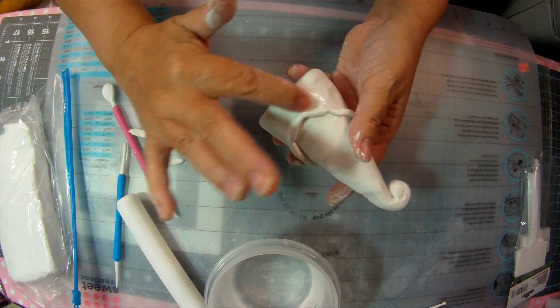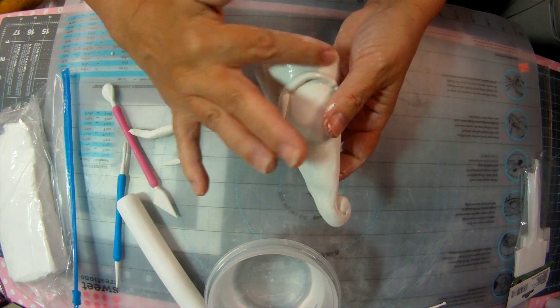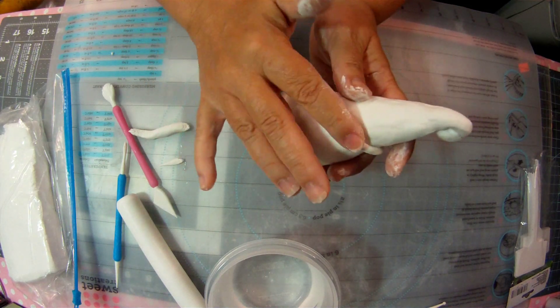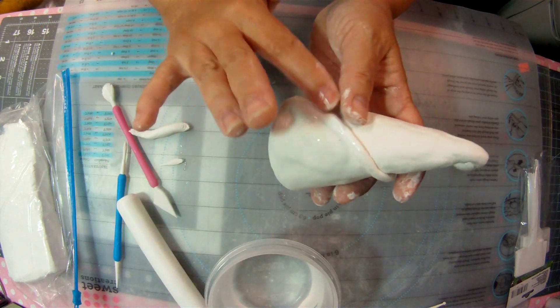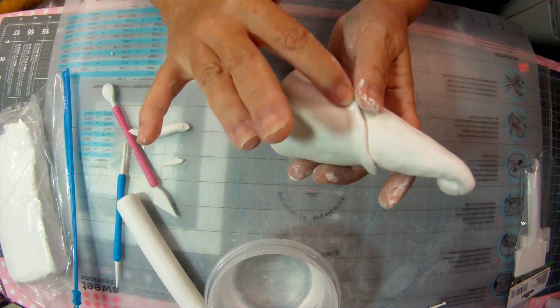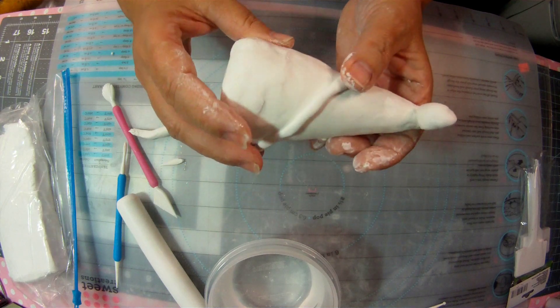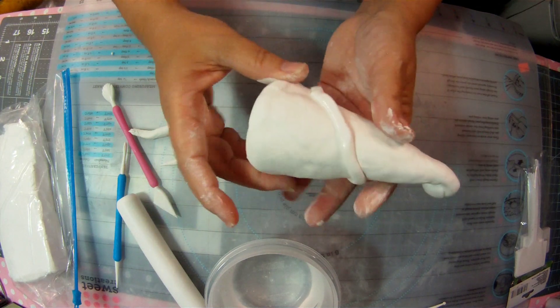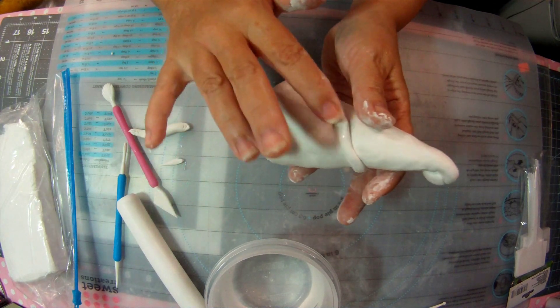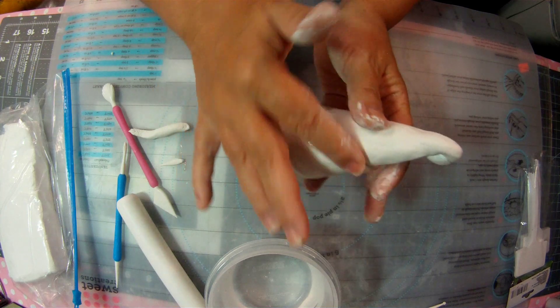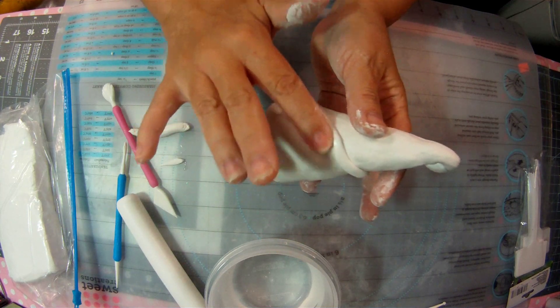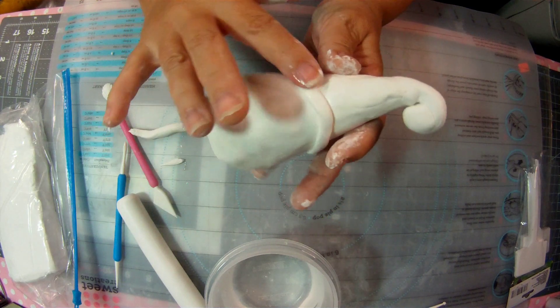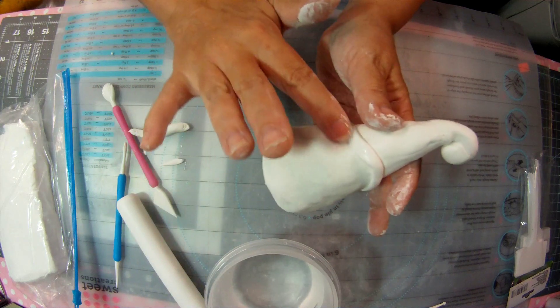Now you're going to smooth it down on the outside. Press it down, or you can leave it as a roll, but leaving it as a roll, it has more of a chance of moving. So I tend to press it kind of flat. You can go really flat. It's up to you.